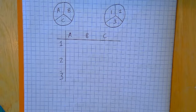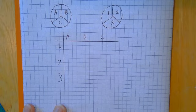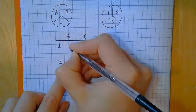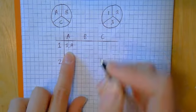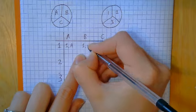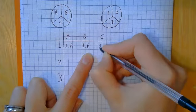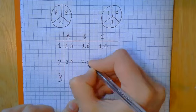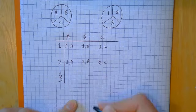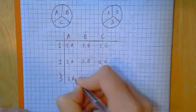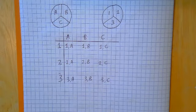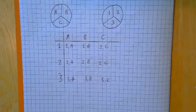Now we fill in the grid. I could get one comma A, one comma B, or one comma C. I could get two comma A, two comma B, or two comma C. And I could get three comma A, three comma B, or three comma C. That's a sample space diagram — simple as that.